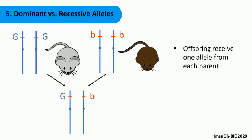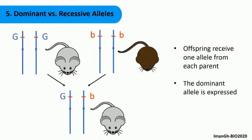The offspring are heterozygous or hybrid. The expressed allele is the dominant one, and therefore the phenotype is gray, since it is dominant over the brown as we discussed in the previous slide.